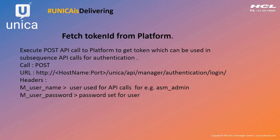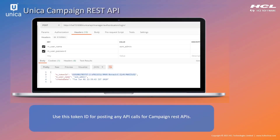The first call we need to execute is the POST API call in the platform to get the token. As you can see on the screen, it will return a token ID which can be used in the subsequent API calls for authentication. The type of call is POST. You can see the URL on the screen — you need to change your server name and the port number.